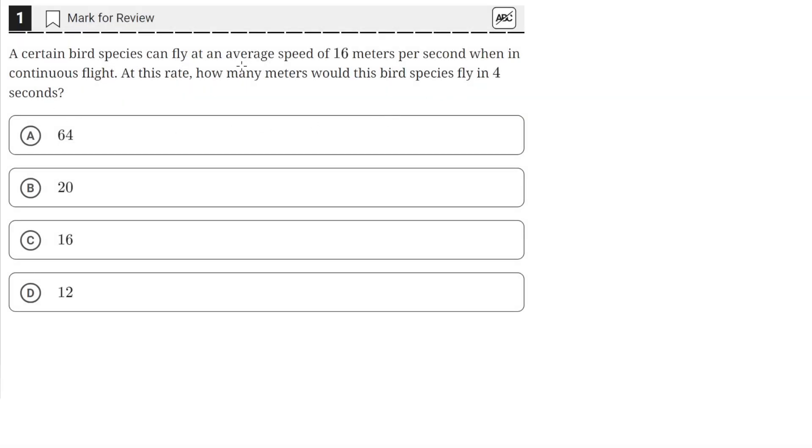A certain bird species can fly at an average speed of 16 meters per second when in continuous flight. At this rate, how many meters would this bird species fly in four seconds?